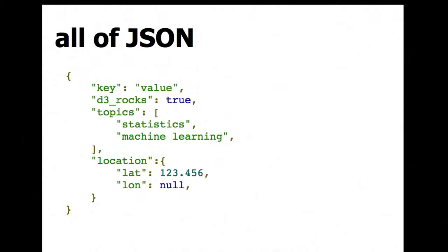JSON is really simple, really easy to use, and is a nice replacement for things like XML which are a bit clunkier. It's a key-value store. Keys are always strings. Values can be strings, Booleans, lists, arrays — so other key-value stores — numbers, and the null object. That's essentially all the things you can do with JSON, and it's very prevalent on the web and forms the basis for how we give data to D3.